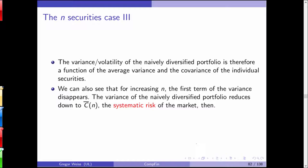The remaining average covariance is referred to as systematic risk — the systematic co-movement between all securities. It would be zero only if all pairwise covariances happened to be zero, but that is not a sensible assumption in practice.